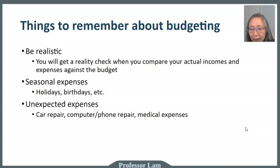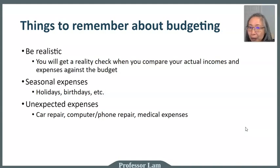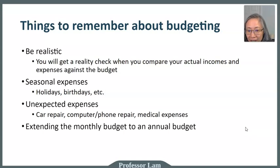Some examples of recurring unexpected expenses are car repairs — if you have an older car and repairs happen every few months, budget for it. The same is true for medical expenses. If every month you're spending more than you budgeted, update that. And when you have your monthly budget, you can expand it and convert it into an annual budget as well.